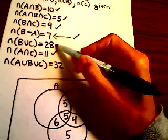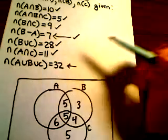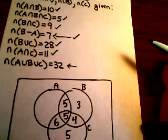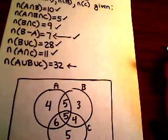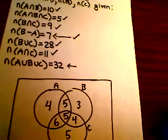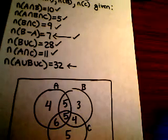And then the last one here that we can use is this one right here. The union of all of them should be 32. Right now we're looking at 28 elements. And so that means this region here must have 4, cardinal number 4.